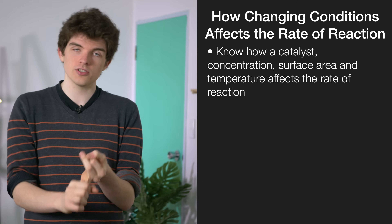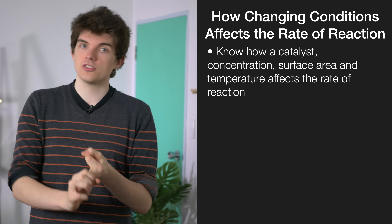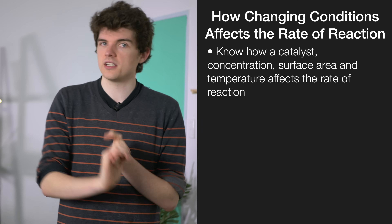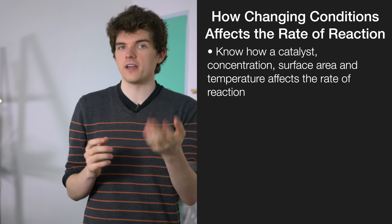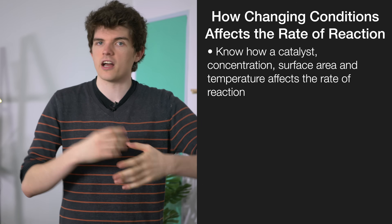So first up is rates of reaction. This will be pretty familiar to you if you did Level 1 acids and bases. You need to know how a catalyst, concentration, surface area, and temperature affect the rate of reaction.